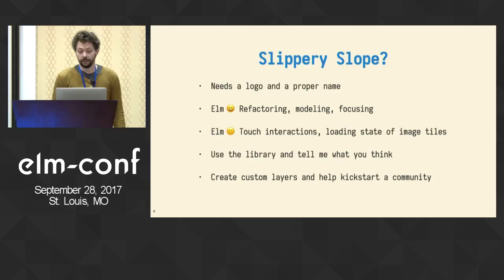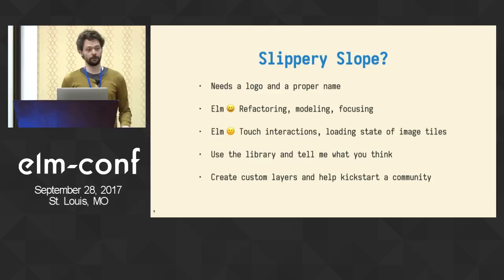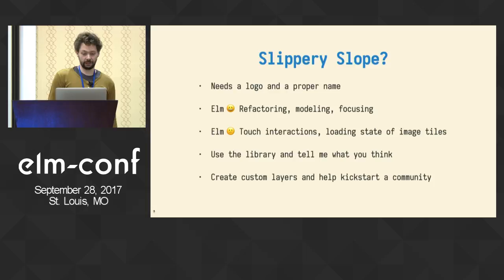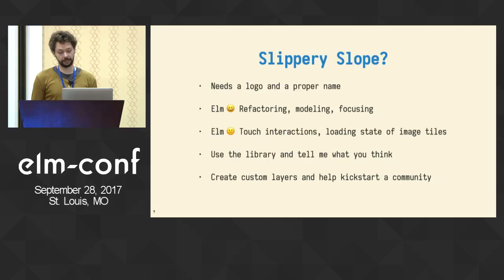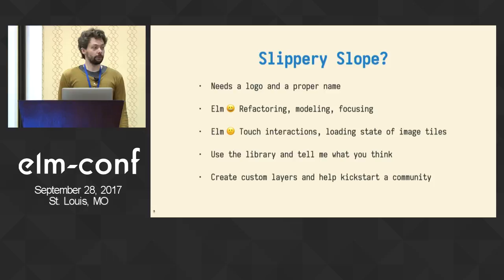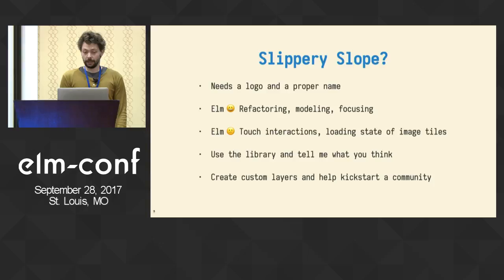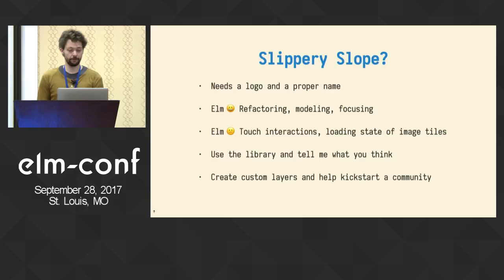Slippy Slope still needs a logo and a proper name. Elm made refactoring and modeling nice, and it focuses you to think about important things like the nice API into your library and documentation. Some things are really hard in Elm though — at the moment there's no touch subscription library, so I had to do some trickery to not lose touch events when panning. And things that are easy in JavaScript, like tracking the loading state of image tiles, are really hard in Elm. But yeah, that's the slippy map — you'll soon be able to install it via the package website. At the moment you have to do it manually. Use it, tell me what you think. The goal is to let you create custom layers, and I want to build a community around it — help me kick off that community.